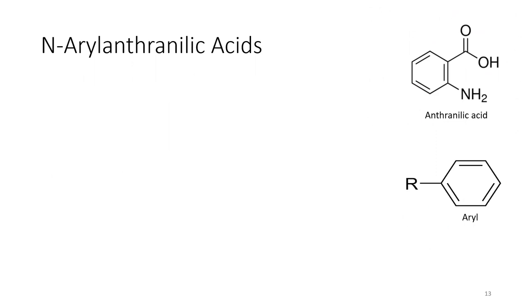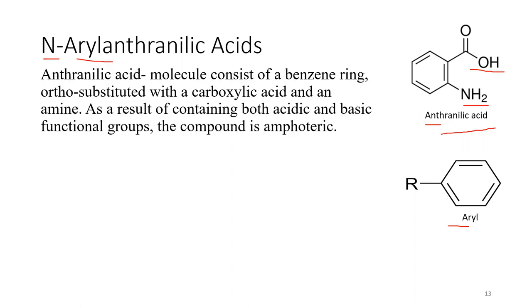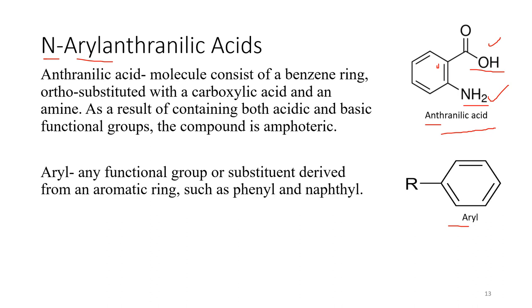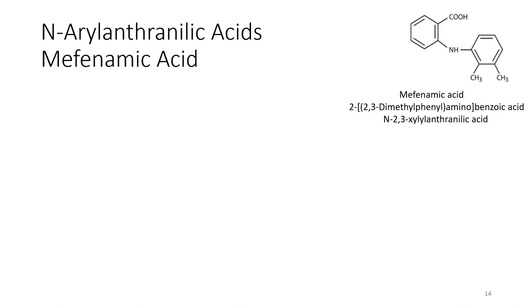The next class is aryl anthranilic acid. Anthranilic acid has a carboxylic acid and an amino group, and with the aryl group attached it becomes aryl anthranilic acid. The anthranilic acid molecule consists of a benzene ring ortho-substituted with a carboxylic acid and an amine, making it amphoteric. Aryl is the functional group or substituent derived from an aromatic ring, such as phenyl or naphthyl. The first aryl anthranilic acid to be discussed is mefenamic acid, most commonly known as Ponstan.